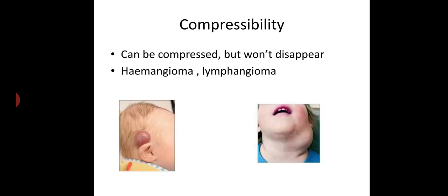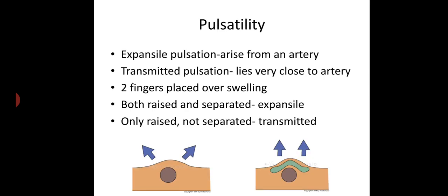Next, compressibility — the mass can be compressed but will not disappear. Examples: hemangioma, lymphangioma. Next, pulsatility — expansile pulsation is seen when the swelling arises from an artery; transmitted pulsation when the swelling is very close to but not arising from the artery. Two fingers are placed over the swelling; when the two fingers are raised and separated, it is expansile pulsation. When the two fingers are raised but not separated, it is transmitted pulsation.